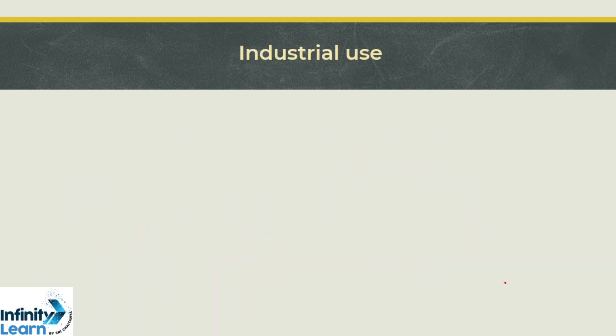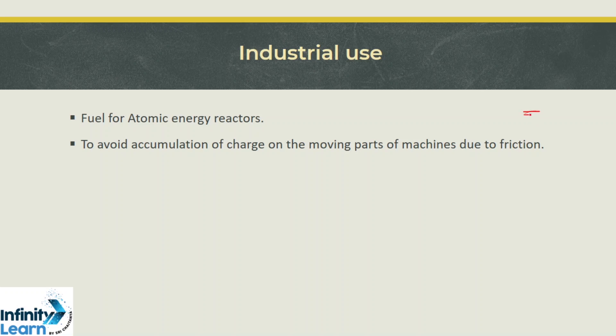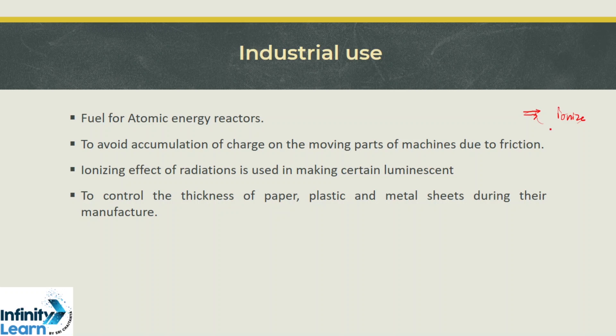Lastly, we have industrial uses. First is fuel for atomic energy reactors using uranium. Second, we can avoid accumulation of charges on moving parts of machines due to friction by using radioisotopes. The ionizing effect of radiation can make certain materials luminescent. Finally, alpha and beta radiations have different penetration ranges and can be used to control the thickness of paper, plastic and metal sheets during their manufacture.